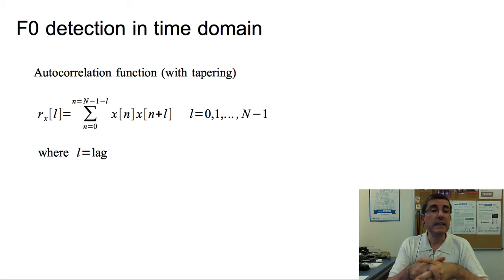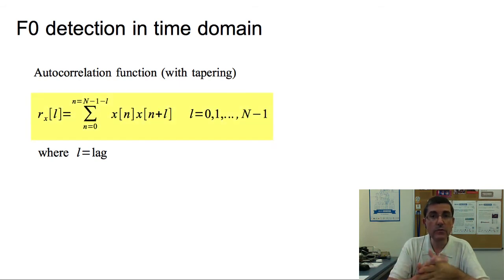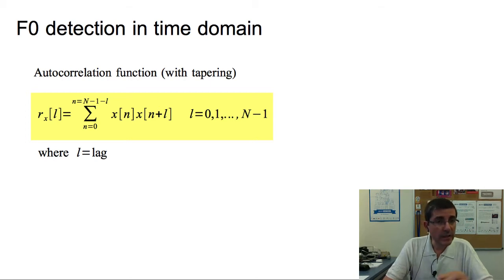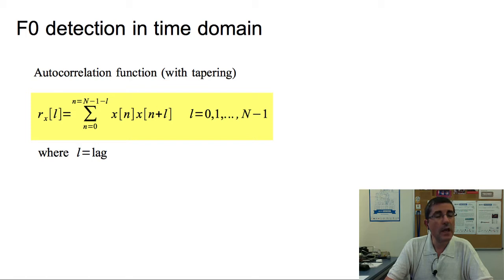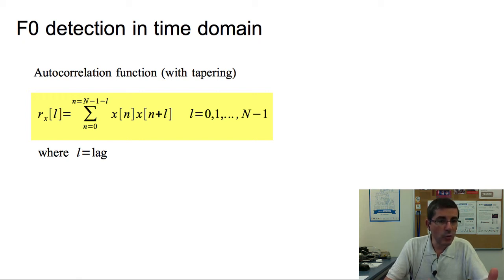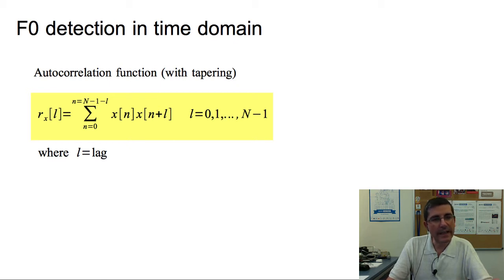To detect the fundamental frequency in the time domain, we basically have to identify the length of its repeating periodic cycle, and the autocorrelation function is a mathematical tool for finding repeating patterns. It is the cross-correlation of a signal with itself — informally, the similarity between samples as a function of a time lag between them. We compute this function for every lag time L, summing over a fragment of a sound multiplied by the sound delayed by that lag. When L equals zero it's the same signal, and for different lags the multiplication will be different.